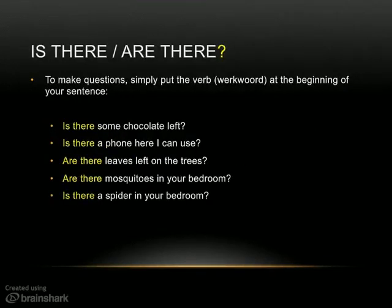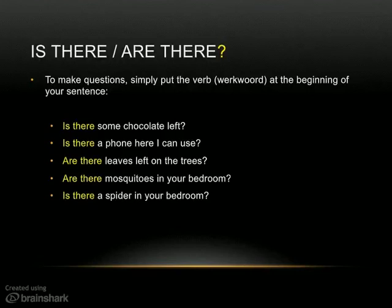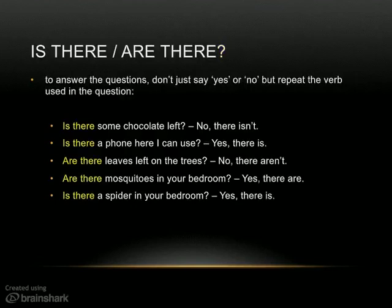To make questions using 'there is' and 'there are', you simply turn the words around and put the verb at the start of the sentence. So instead of saying 'there is some chocolate left', to ask the question you say 'is there some chocolate left?' If you want to say 'there is a phone I can use' as a question, you say 'is there a phone I can use?' With the plural: 'there are mosquitoes in my bedroom' becomes 'are there mosquitoes in your bedroom?'